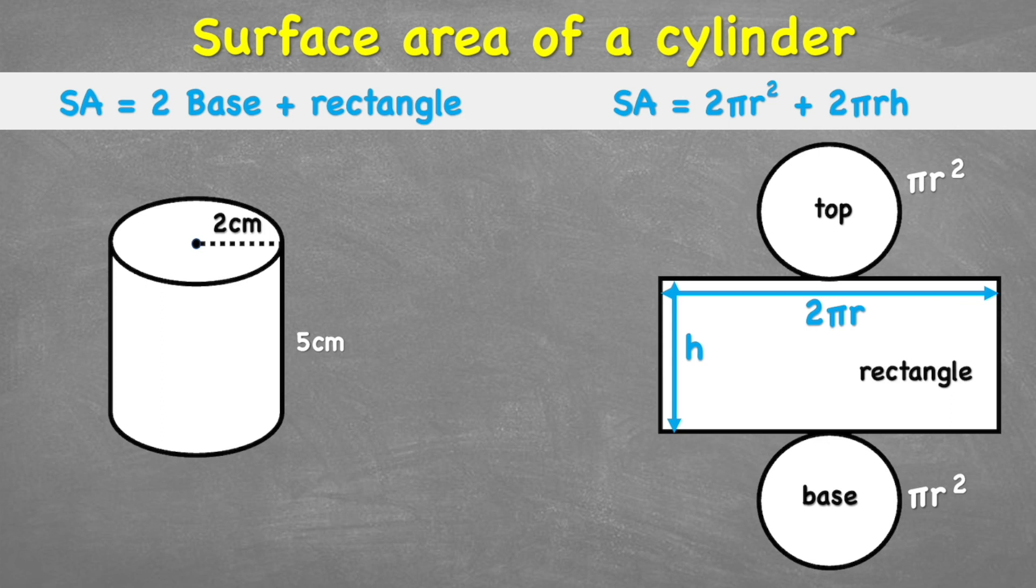Now let's look at the official formula. The official formula says 2πr² + 2πrh. So let's break this down. Well, the πr² that we can see here, that is the formula to work out the area of a circle. And the 2 refers to the fact that we have two circles.